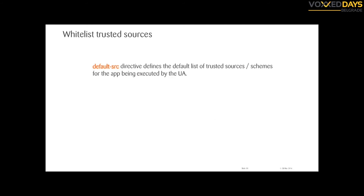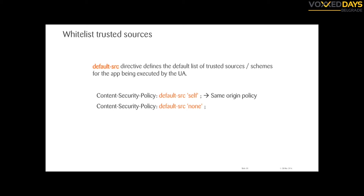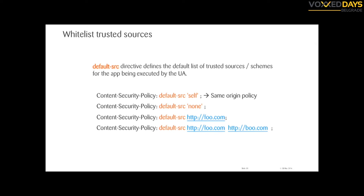One of the first things when defining a CSP policy is the 'default-src' directive, which says what sources of content — like JavaScript and HTML — you trust. You can define it with 'self,' which stands for the same-origin policy — meaning only things from the same host, scheme, and port. You can also define 'none' and use more explicit directives. You can put a specific URL or a list of URLs. Please don't set it to a wildcard star, because that means you're trusting everything again.